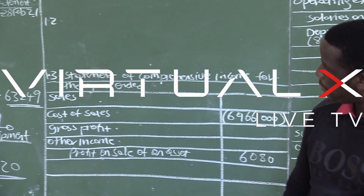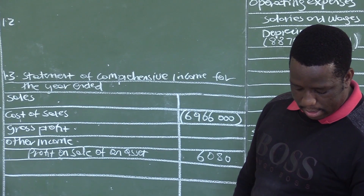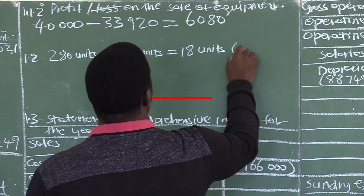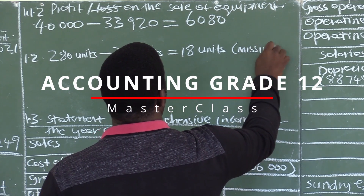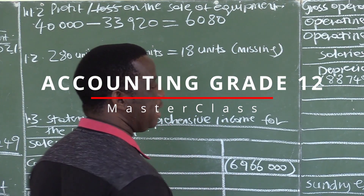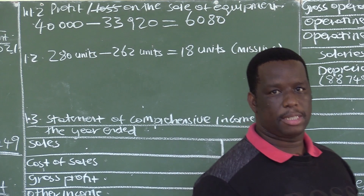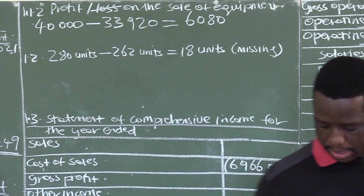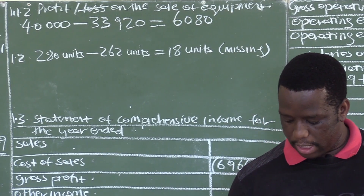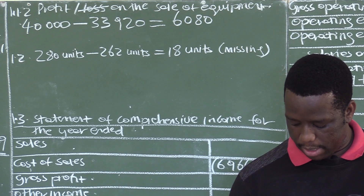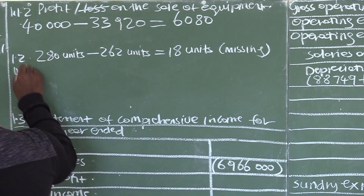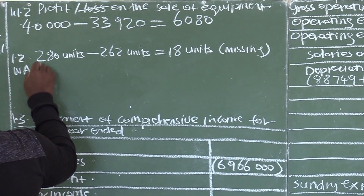Question 1.2: Calculate the trading stock deficit. There are 18 units missing and we want to calculate the value of those 18 units. We are told that this business is using the weighted average method, so we need to calculate the weighted average price.